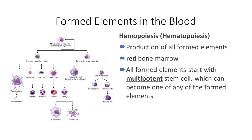Hematopoiesis mostly happens in your long bones — like your femur, humerus, radius, ulna — in the red marrow. Do you know why it's called red marrow? Because you're producing red blood cells. Yellow marrow contains fat — that's what dogs are going after when they chew on bones; they want to get to the fat, the rich tasty stuff. That marbling in steak — the white parts — that's fat.